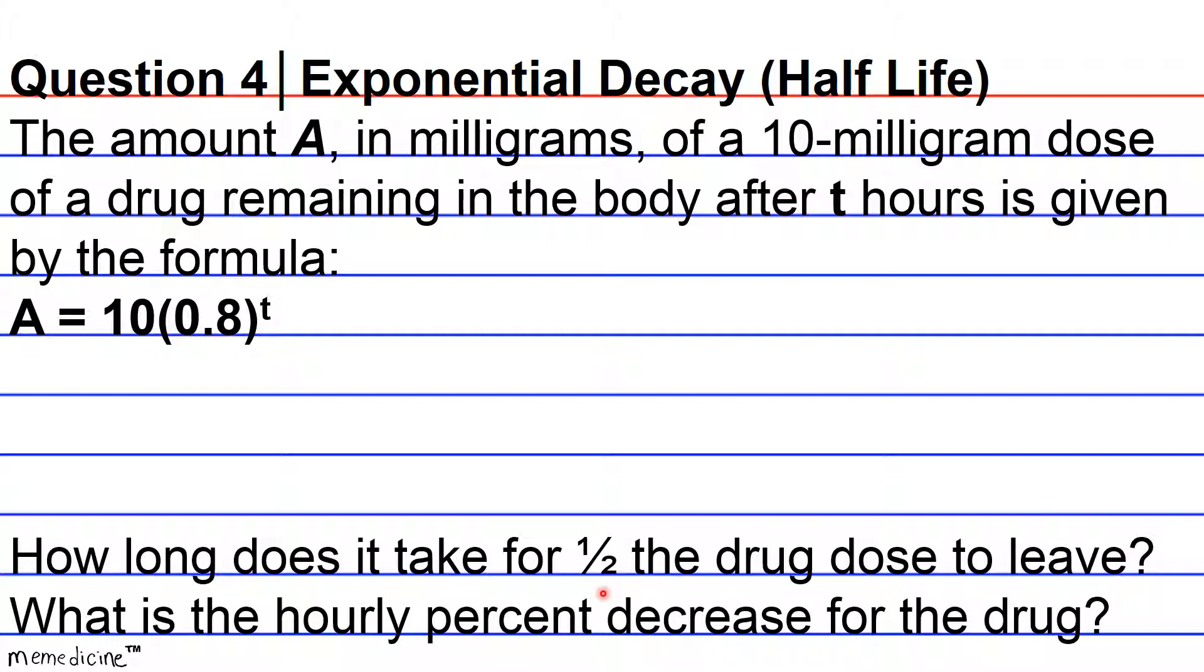Half of 10 mg, the initial value of the drug as we're told in the question stem, is going to be 5 mg. So what we're going to do is substitute 5 for A, because if half of the drug dose leaves, then this means that half of the drug dose is left.